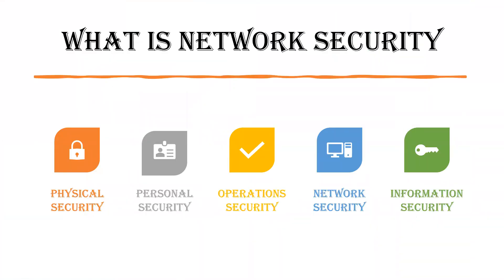Starting off, let us rule out why we need security. It can be any kind of security — it may be based on protocols or it might be based on any set of algorithms made to work. Obviously, when there is an increase in technology, we have to look into the security provided for that technology. Here you can see a series of network security types: physical security, personal security, operation security, network security, and information security.